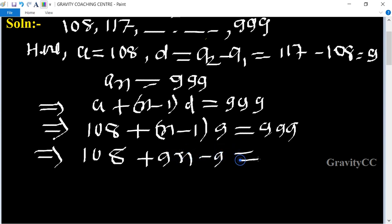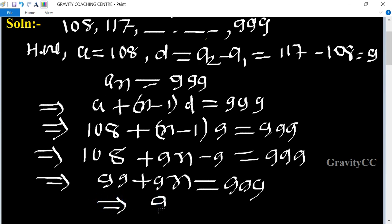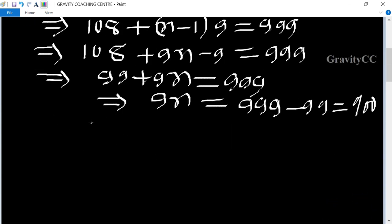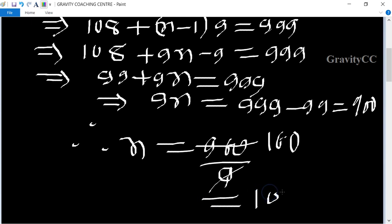Simplifying, 99 plus 9n equals 999, so 9n equals 900. Therefore n equals 900 divided by 9, which equals 100. This is the required answer.